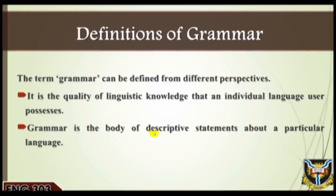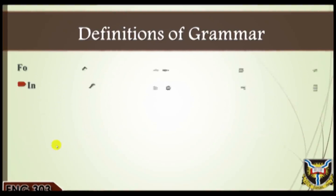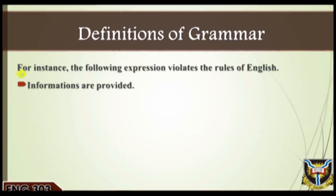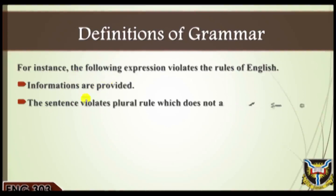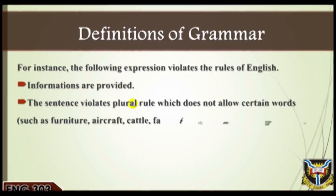Two: grammar is the body of descriptive statements about a particular language — rules that must be followed if one wants to produce acceptable expressions. For instance, in English there are rules for forming plurals of nouns, rules for forming past tenses of verbs, rules of concord, and so on. For instance, the following expressions violate different rules of English: (a) 'Informations are provided,' (b) 'He goes to school yesterday,' (c) 'Boys play pranks.'